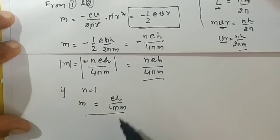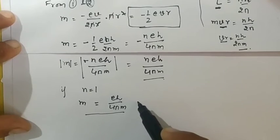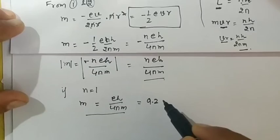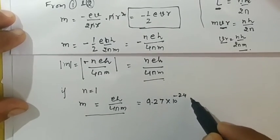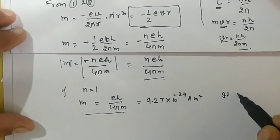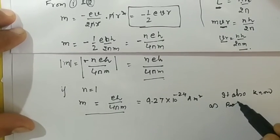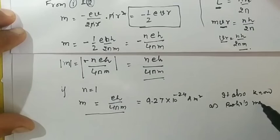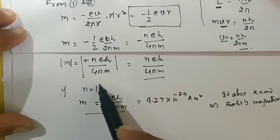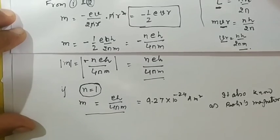Since e and m are the charge and mass of the electron and h is Planck's constant, all have fixed values. If you put all the values, you will find that it comes out to be 9.27 × 10^-24 ampere meter squared, and it is also known as Bohr's magneton.